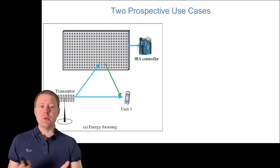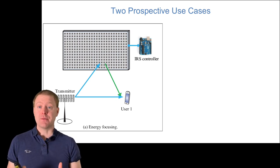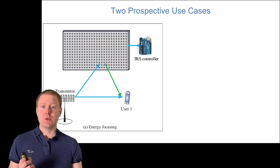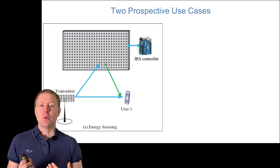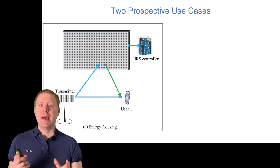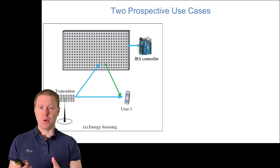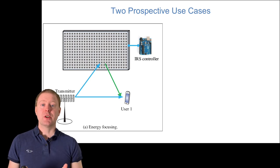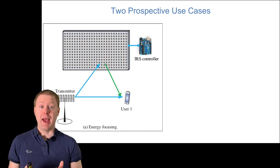Two popular use cases are energy focusing and energy nulling. Energy focusing is when the transmitter sends a signal to user 1, and to improve the signal-to-noise ratio, you put up an intelligent reflective surface called an IRS. You control it such that the signal scattered off the surface is focused towards the user, like a lens. You ensure the signal from the IRS is constructively combined with the direct path.